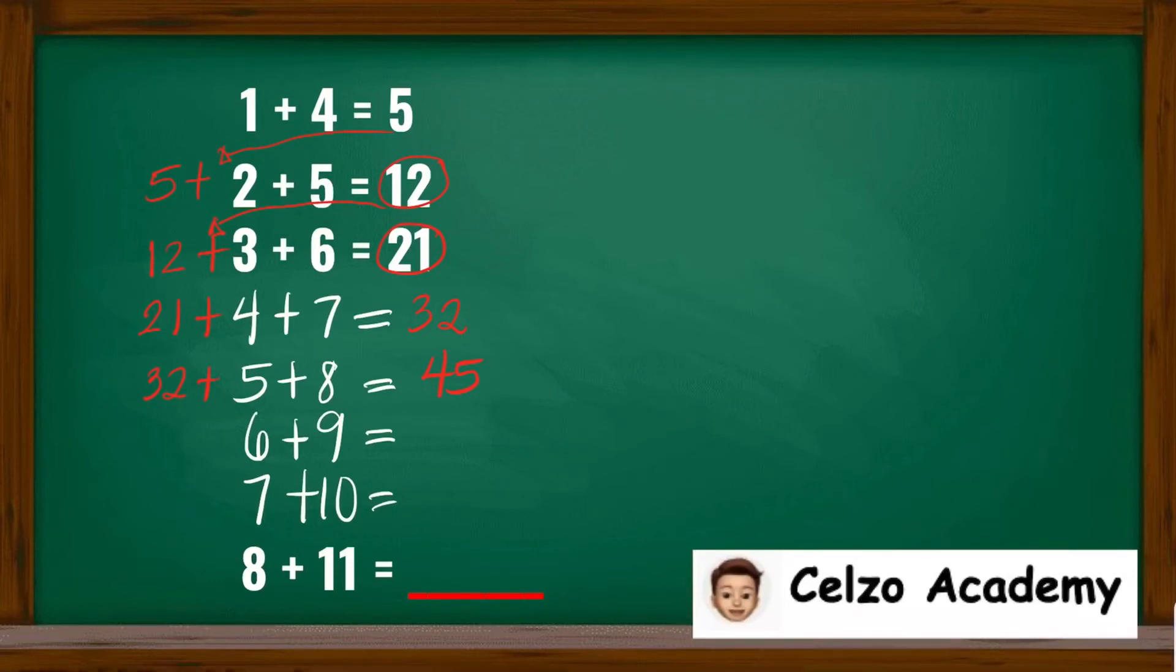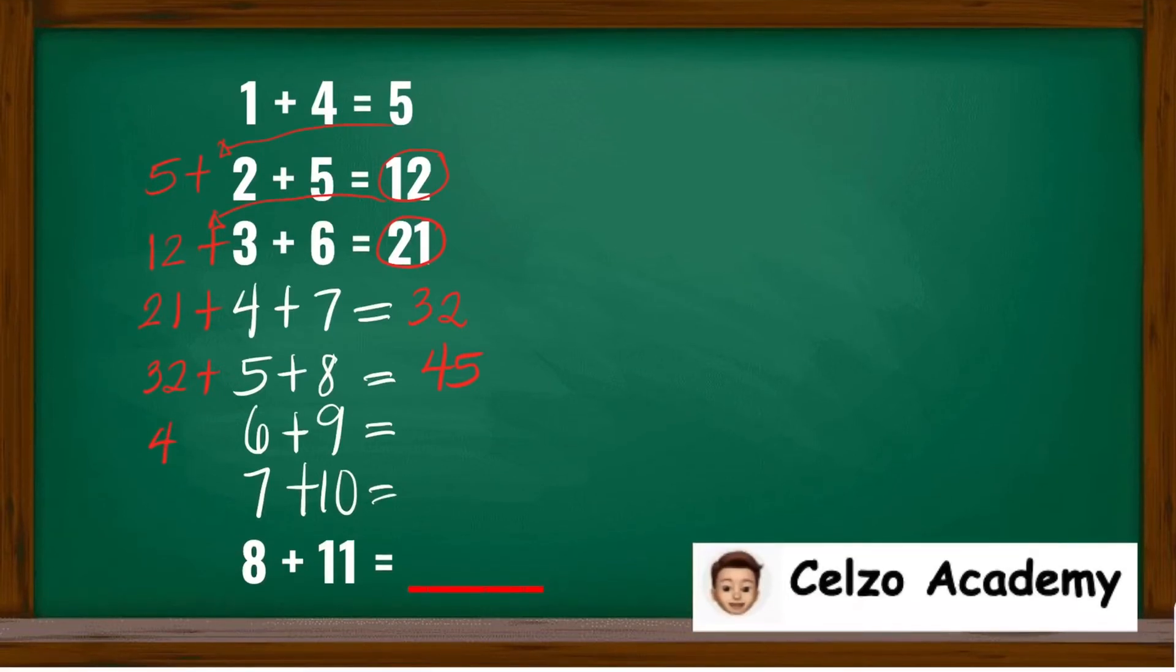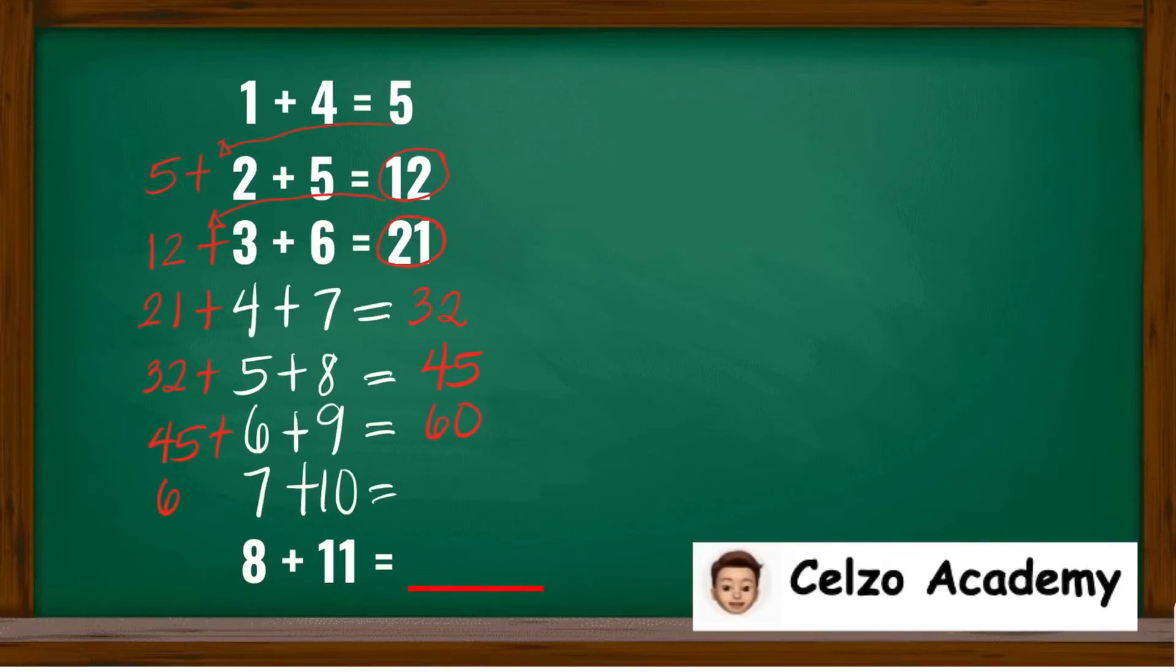For the 6 plus 9, we need to add the previous answer, 45. So 45 plus 6 plus 9 is 60. For 7 plus 10, we need to add the previous answer, 60. So the answer is 77.